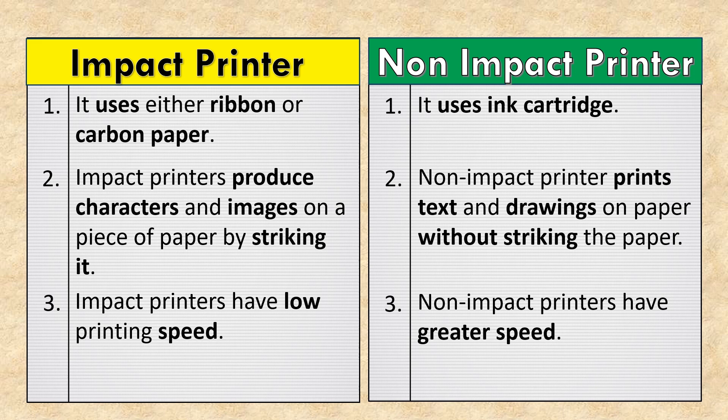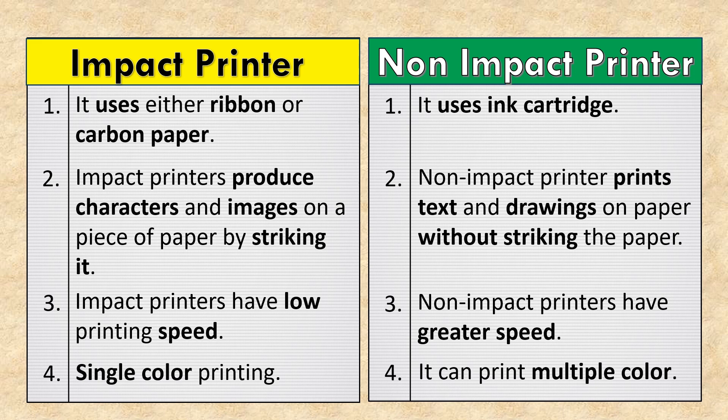Impact printers have low printing speed, while non-impact printers have greater speed. In impact printers, only single color printing is possible, but non-impact printers can print multiple colors.